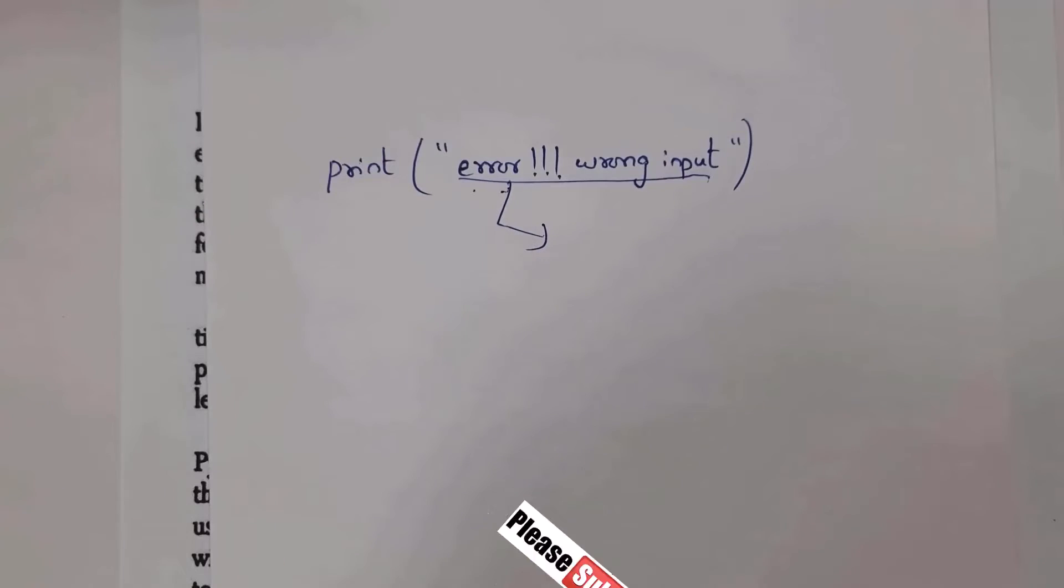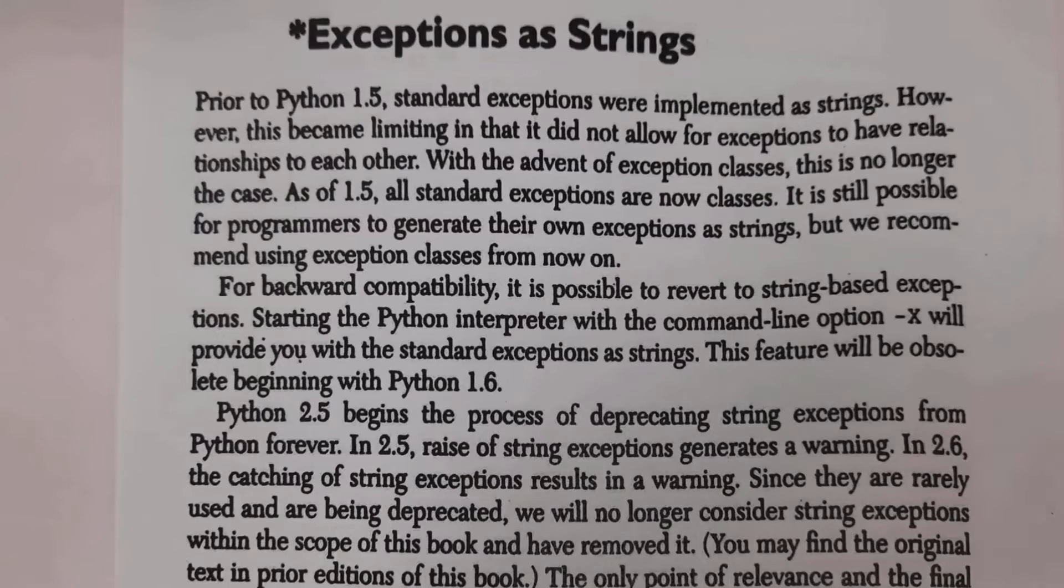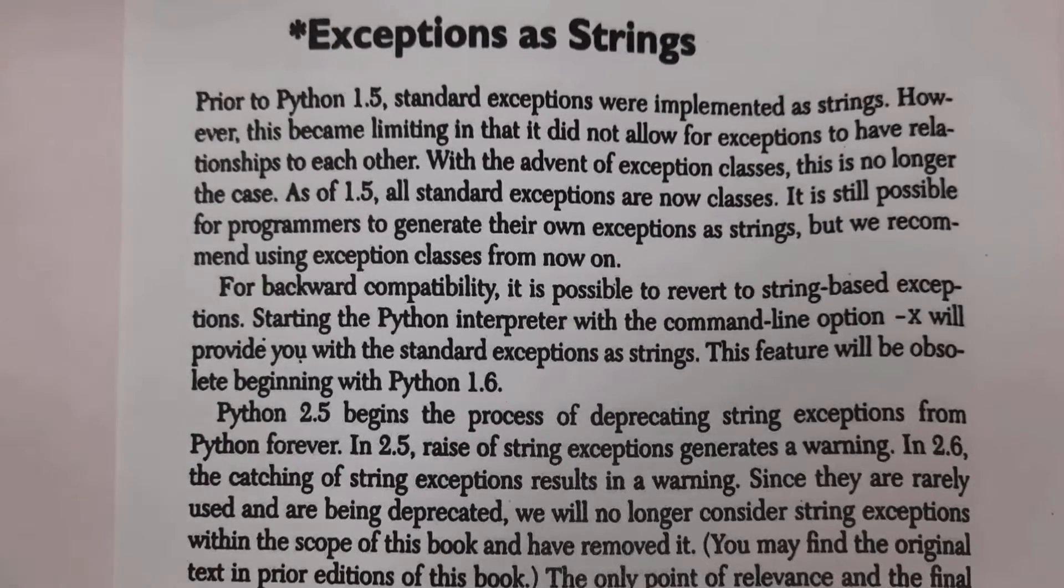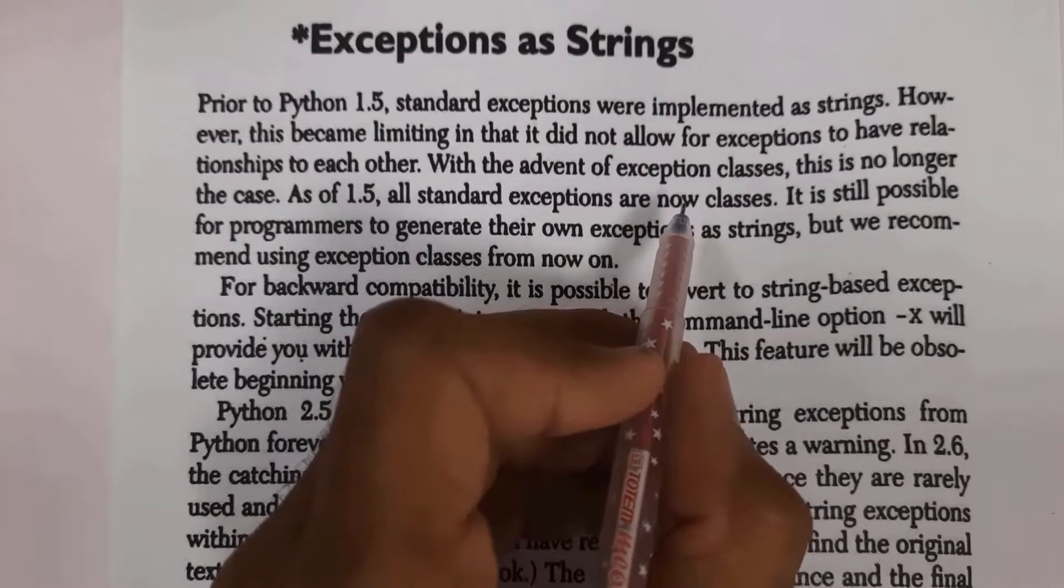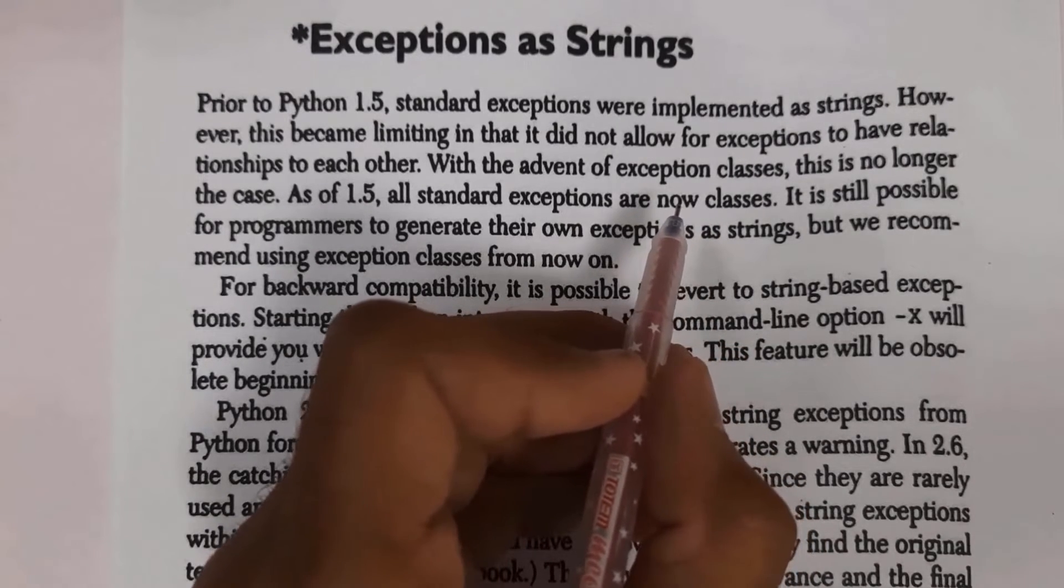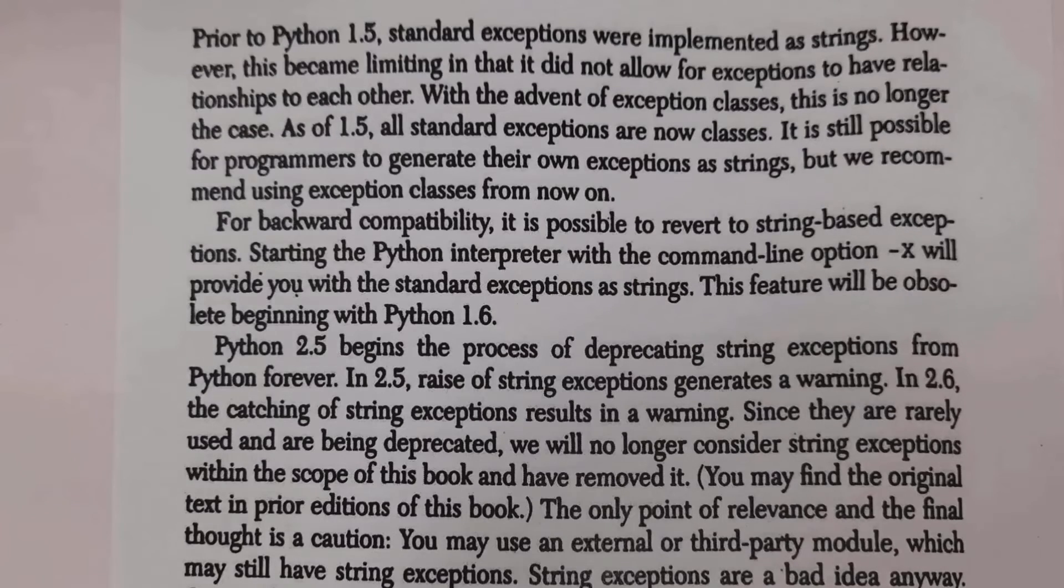To overcome this problem, from Python version 1.5, they introduced exception classes. Using exception classes, we can create our own exceptions. From Python version 1.6, if you want to create string exceptions, after starting Python, you need to type the command '-x'. This '-x' command provides standard exceptions as strings.